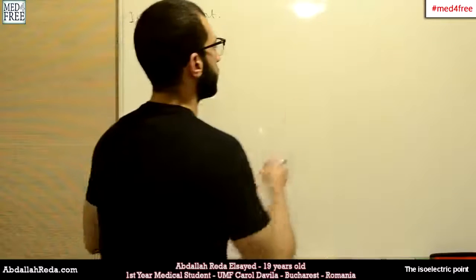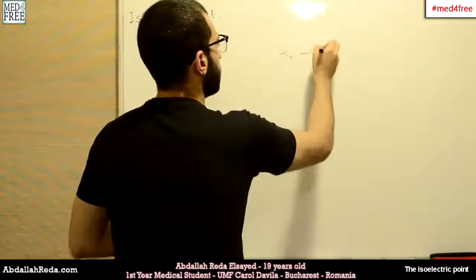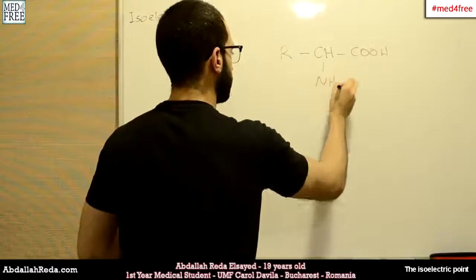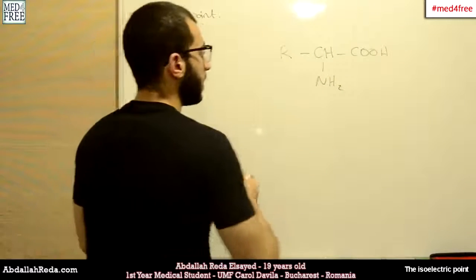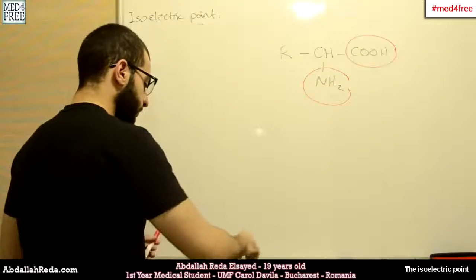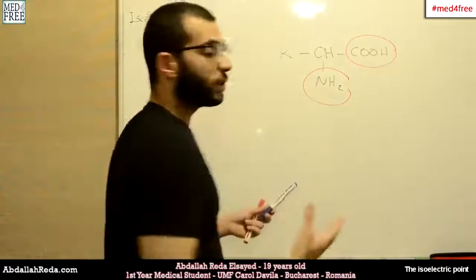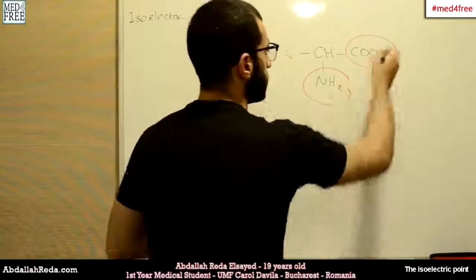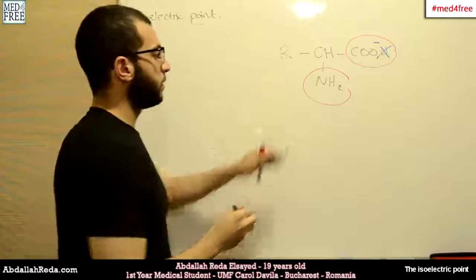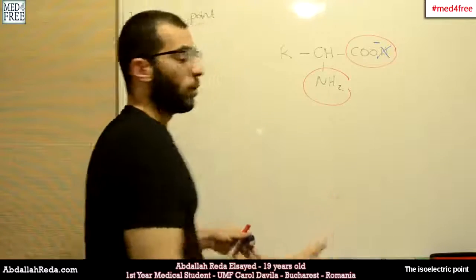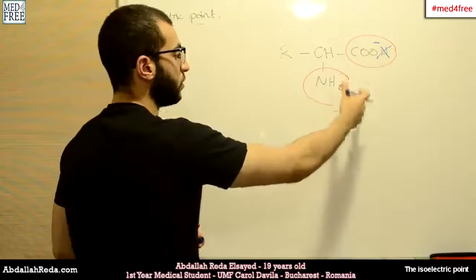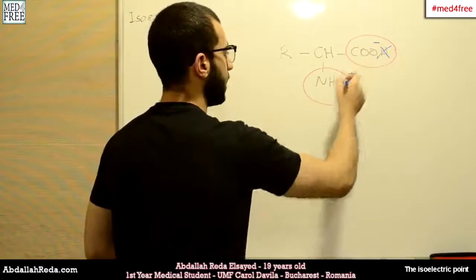We'll begin with the basic structure of the amino acid. This is our amino group and this is the carboxylic group. The carboxylic group is more acidic so it tends to lose its hydrogen and gains a negative charge, and the amino group is more basic so it accepts a proton and instead of being NH2 it becomes NH3 and gains a positive charge.